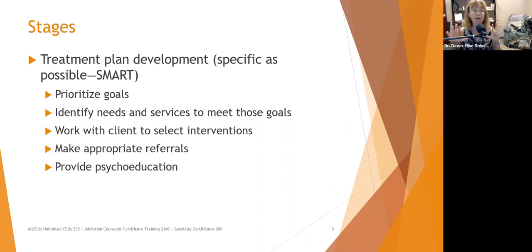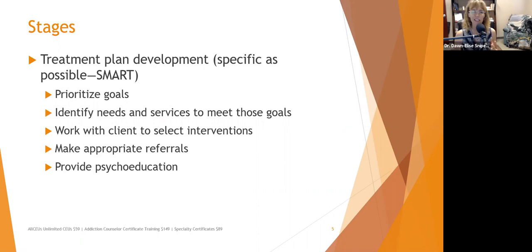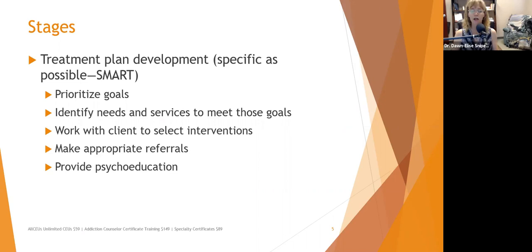Identify whether clients need a referral, family therapy, or school interventions. Work with the client to select the most appropriate interventions — if you have an opportunity to articulate that you're working in conjunction with the client, do so. Provide psychoeducation during treatment plan development, helping the client understand what might be contributing to their problem and informing them about different treatment options available.